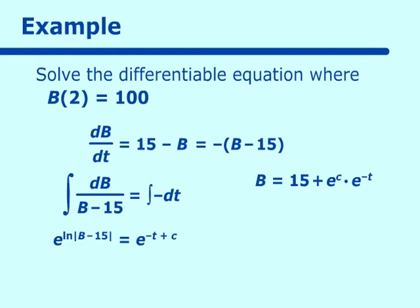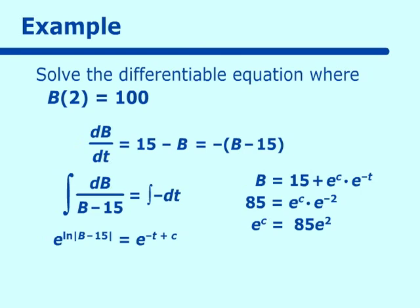Using the initial condition b(2) = 100: substituting gives 100 = 15 + e^c · e^(-2), so 85 = e^c · e^(-2), which means e^c = 85e². Substituting back, b = 15 + 85e² · e^(-t), which simplifies to b = 15 + 85e^(2-t). A somewhat complicated example, but not very difficult.